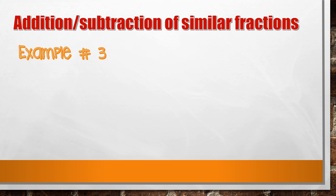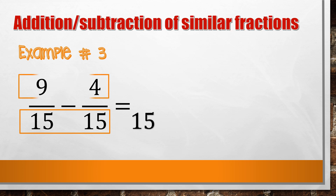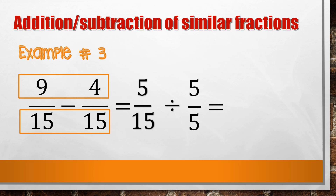Example number 3 is subtracting similar fractions — the same process as addition. Copy the denominator, then subtract the numerators. If we can simplify the answer, divide by its GCF. The GCF of 5 and 15 is 5. So 5 divided by 5 equals 1, and 15 divided by 5 equals 3. Therefore, 9/15 minus 4/15 equals 1/3.